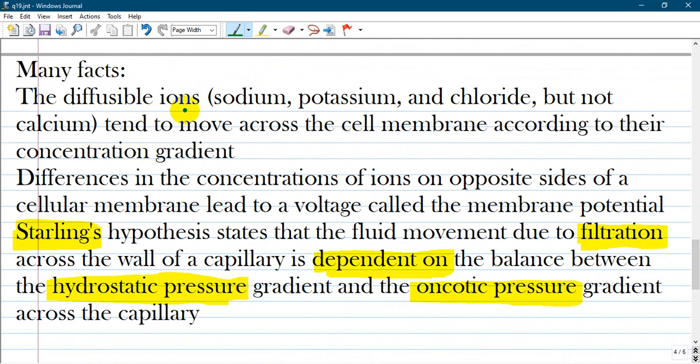Also, many effects show that diffusible ions are sodium, potassium, chloride but not calcium, and they tend to move across the cell membrane according to their concentration gradient. Difference in the concentration of ions on opposite sides of a cellular membrane leads to a voltage called the membrane potential.